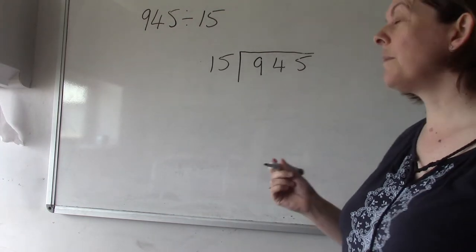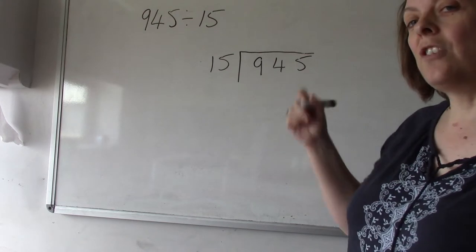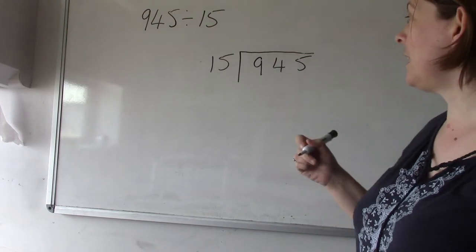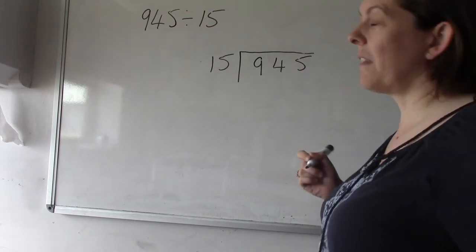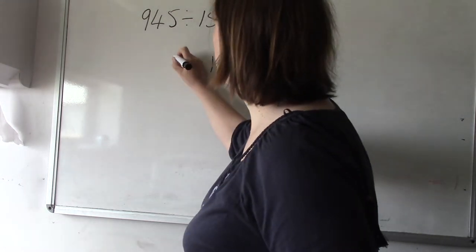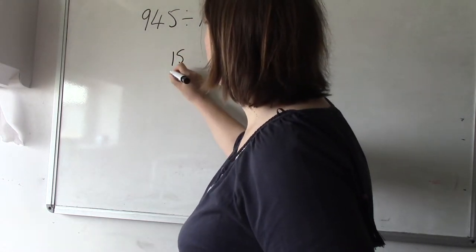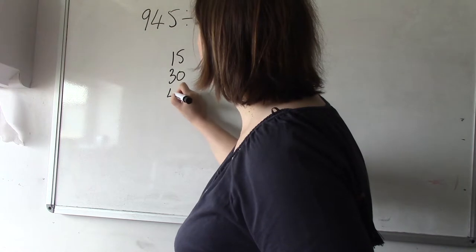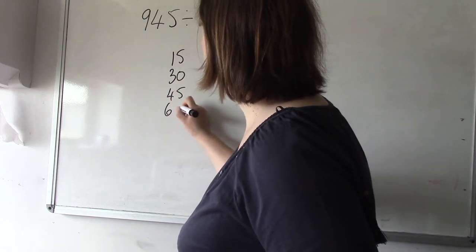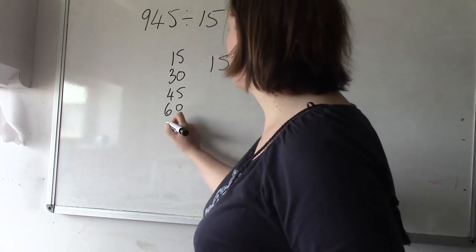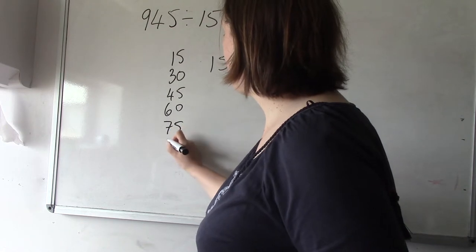Now, not everybody could reel off the 15 times table straight off, but if you just write out your multiples of 15 we'll eventually get to a number that is or is close to 94. So here we go: 15, 30, 45, 60, just adding 15 each time, 75 and 90.